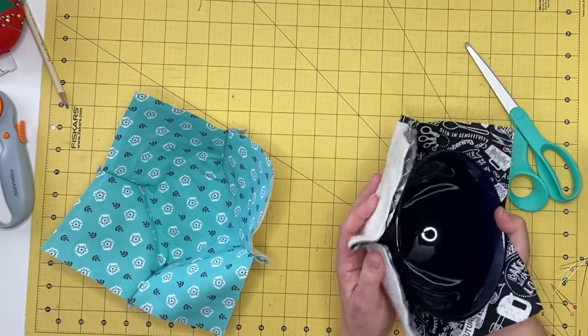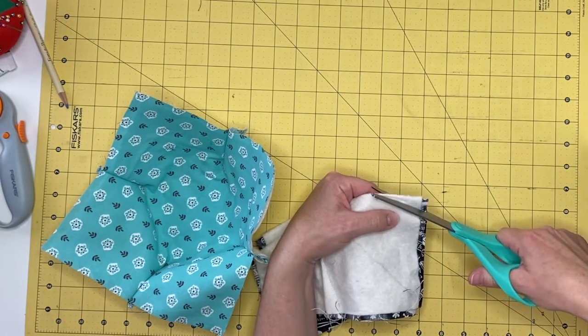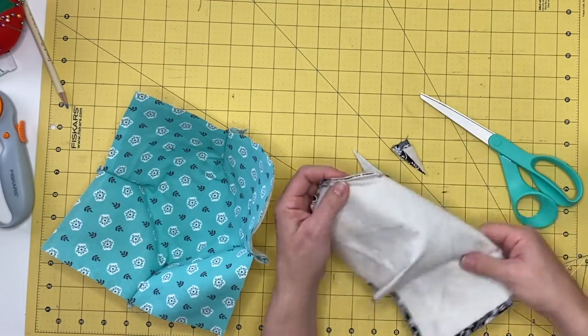If your microwave bowl cozy is a perfect fit, go ahead and cut off the extra fabric on each dart. Repeat the last four steps for your other X sewn square.